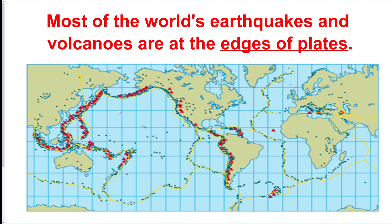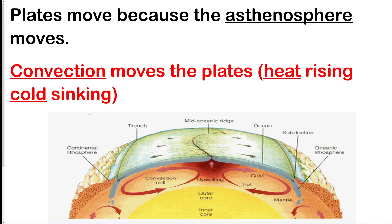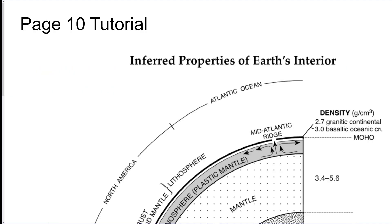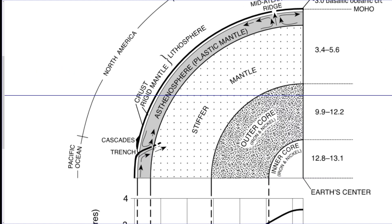Most of the Earth's earthquakes and volcanoes are happening at the edges of plate boundaries, especially in the Pacific Ocean — that's the Ring of Fire. Plates move because the asthenosphere moves via convection currents: heat rises and cold sinks, making giant convection cells that move the plates. You definitely have to know how to read this chart.